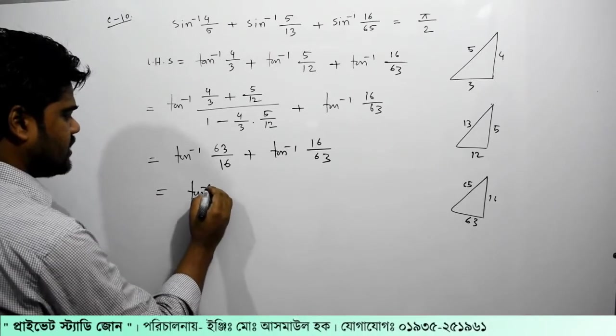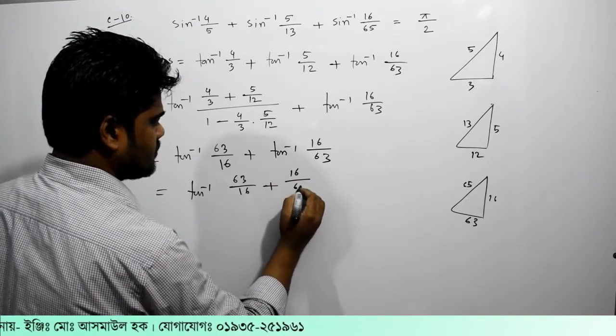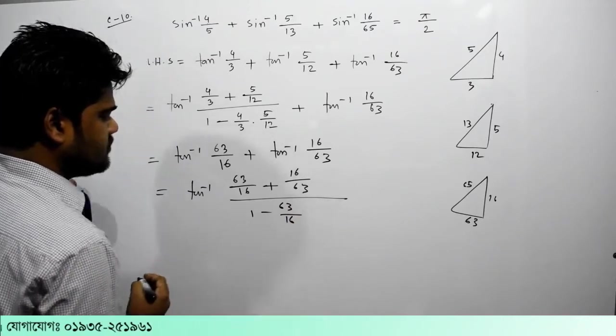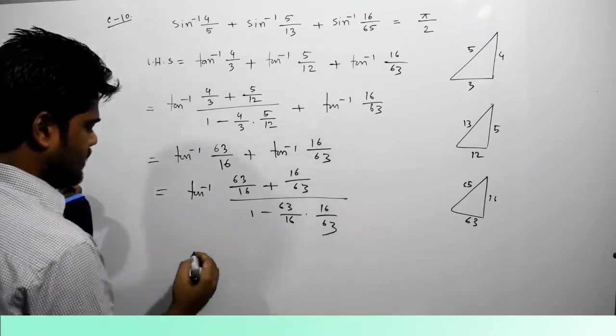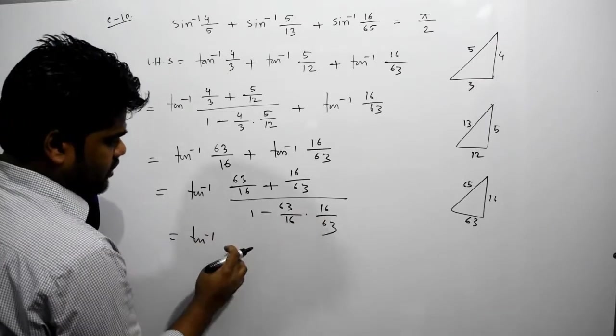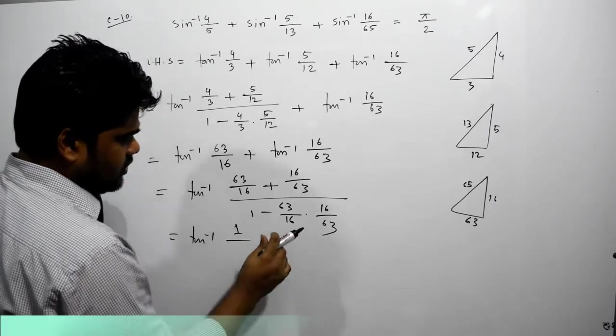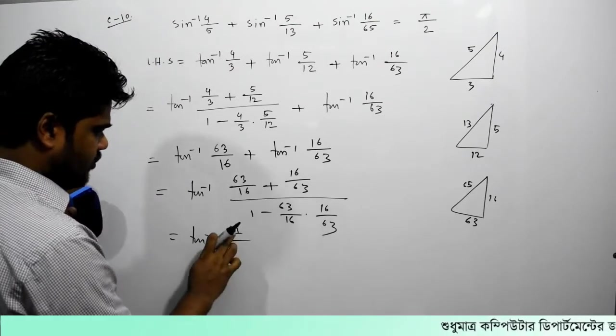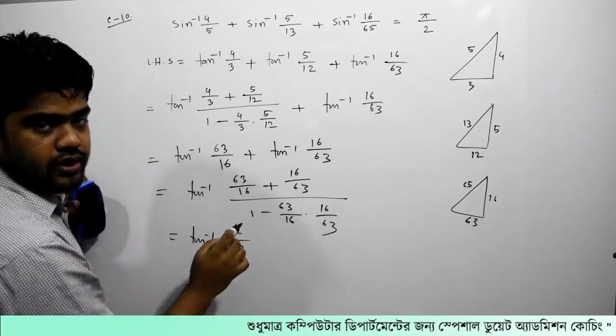Tan inverse a plus b divided by 1 minus 63, 6 into 63, tan inverse 1 minus 1, 1 minus 1.